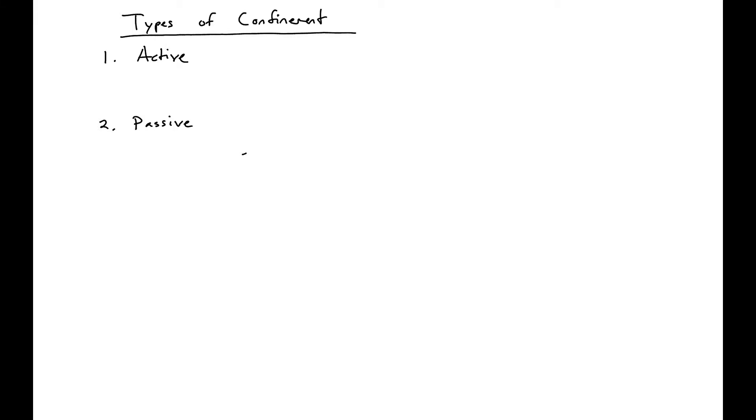So there are two main types of confinement. There's active confinement, in which you have your specimen, and you actively confine it by applying some pressure in the tangential direction. And this will affect your strength, given this expression that we looked at earlier.